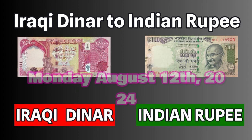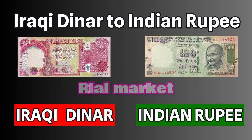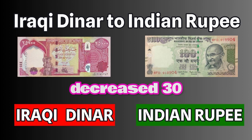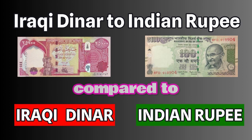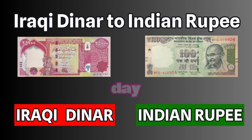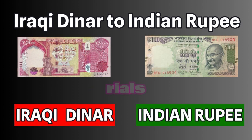The price of Indian rupee today, Monday, August 12, 2024, is in the 7,110 riyal market, which has decreased 30 riyals — 0.42% — compared to the previous day. Each unit of Indian rupee is sold at the price of 7,140 riyals.